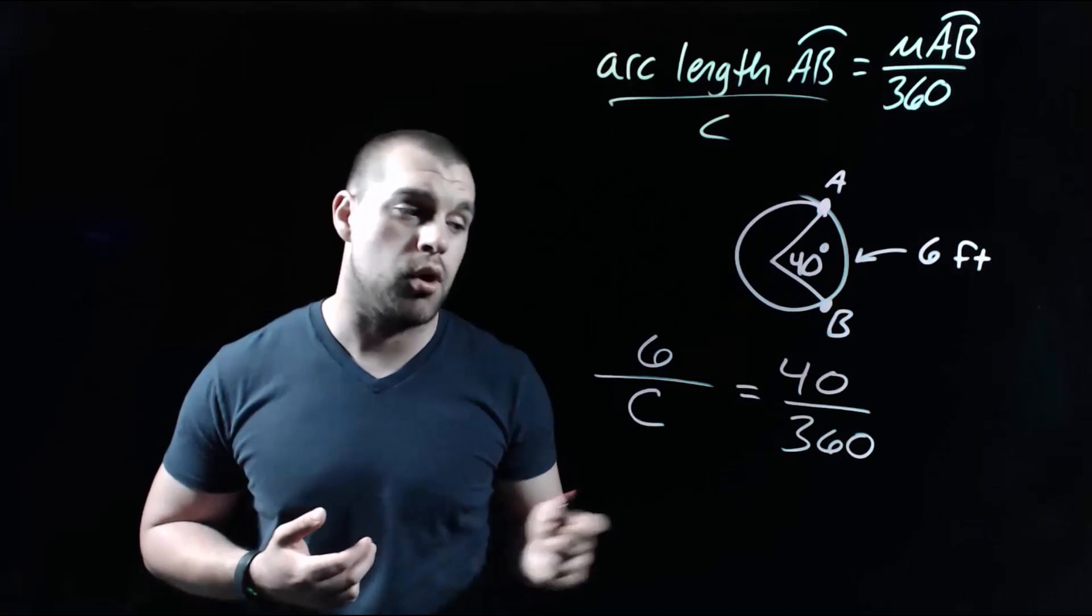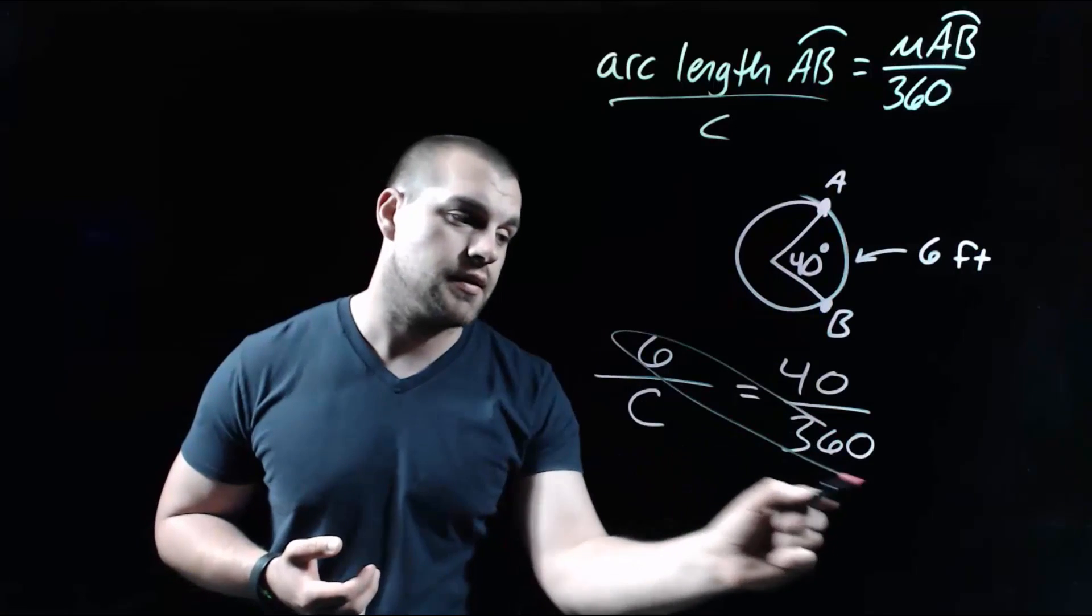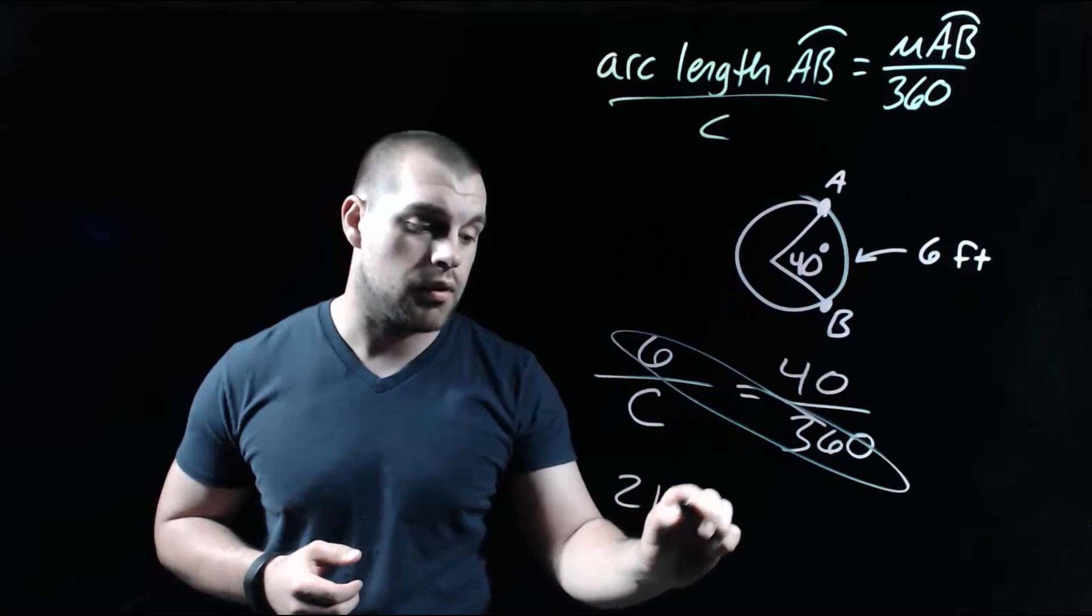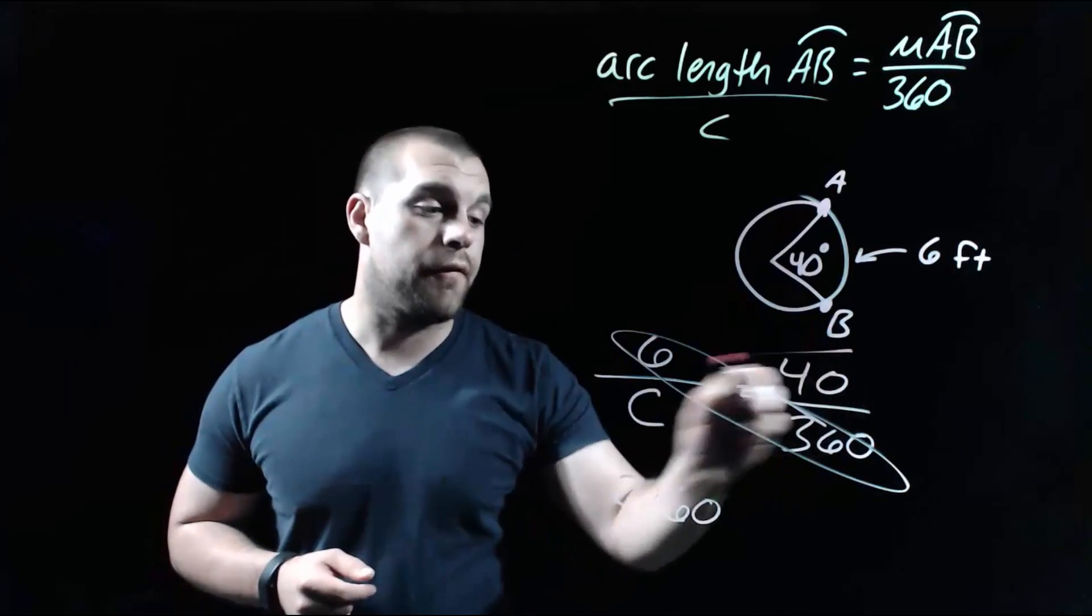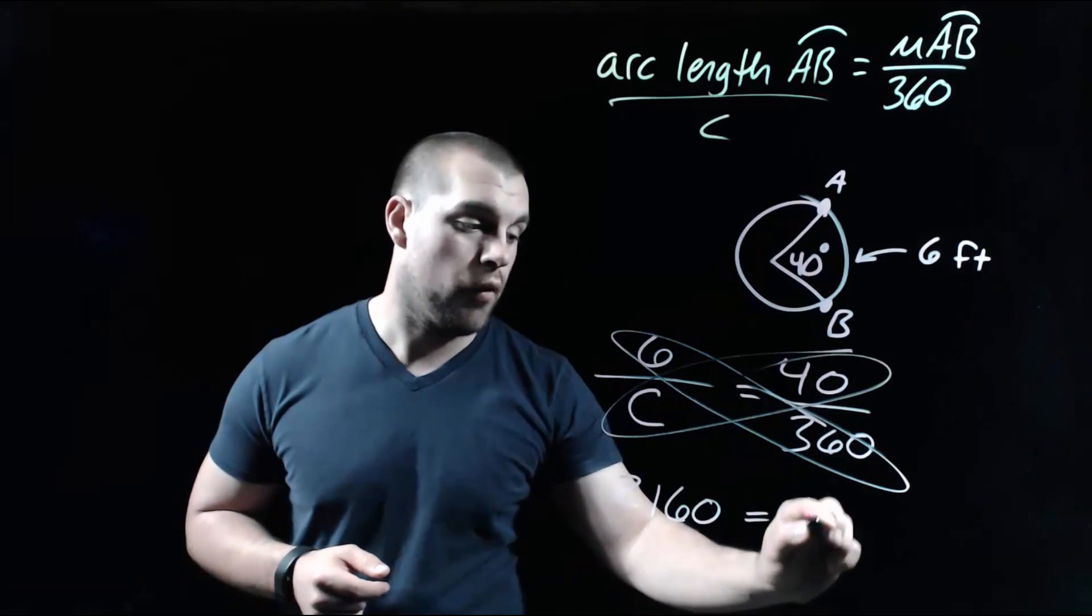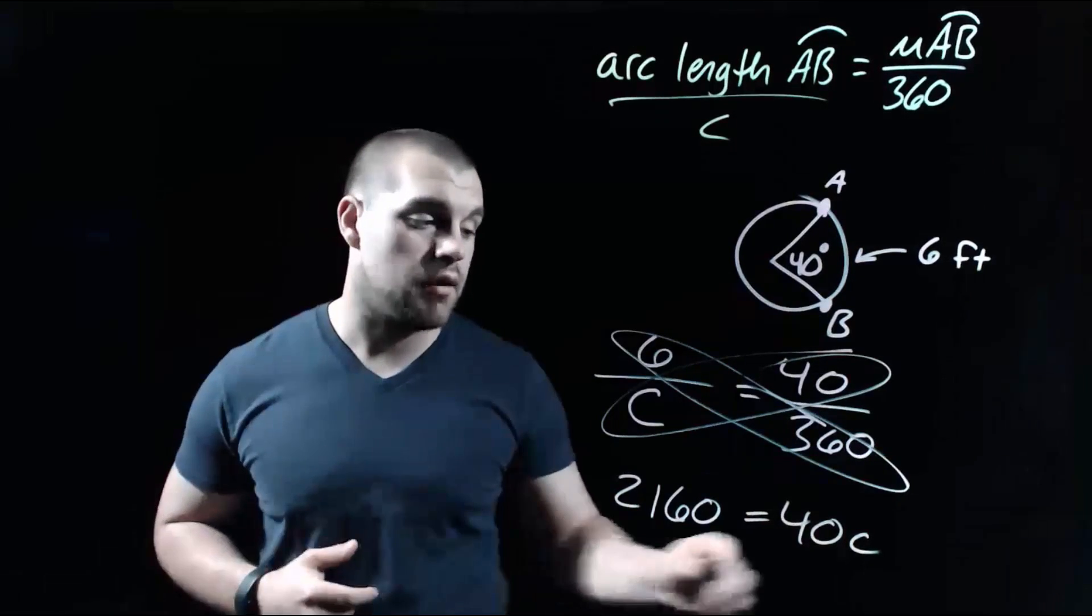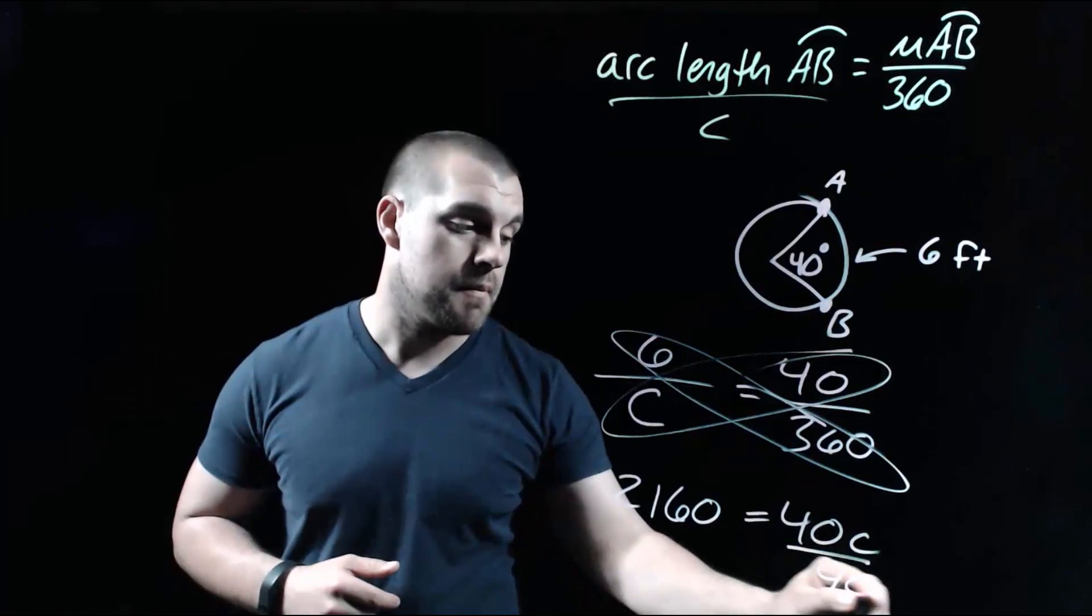Now, since we've got fractions on each side of our equation, I'm going to do some cross multiplying. So I'm going to take the six times the 360. When we do that, we get 2160. And then if we take the 40 times C, we get 40C. Our last step is going to be to get C all by itself. So we have to divide both sides by that 40.